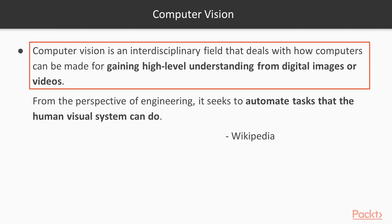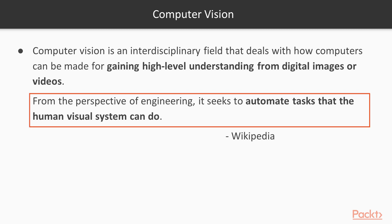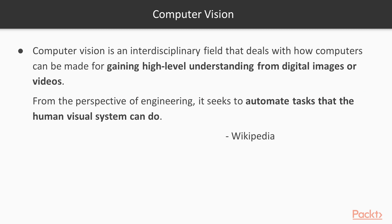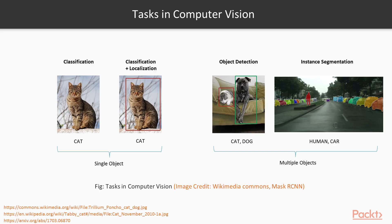So we understand that vision is all about making sense of pixel data — static images or moving videos. Further, from the perspective of engineering, it seeks to automate tasks that the human visual system can do. From a practical standpoint, the aim is to create vision systems which can replicate some of the very tasks that humans can do with their vision system. Computer vision is an active area of research where researchers are trying to push the boundaries of what vision systems can do.